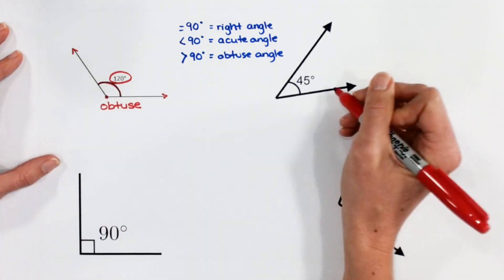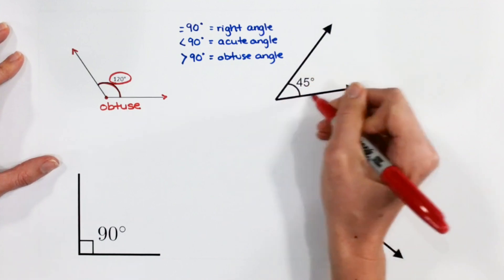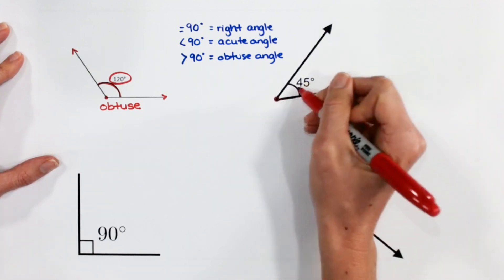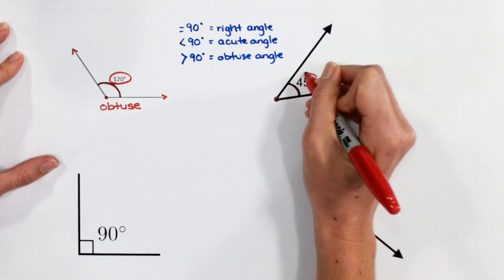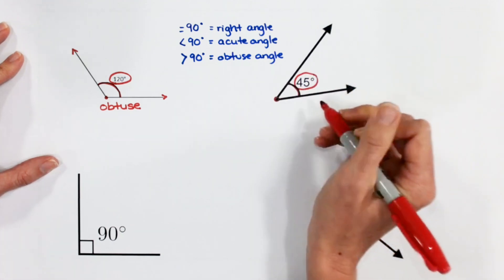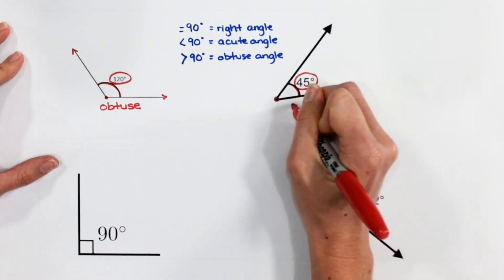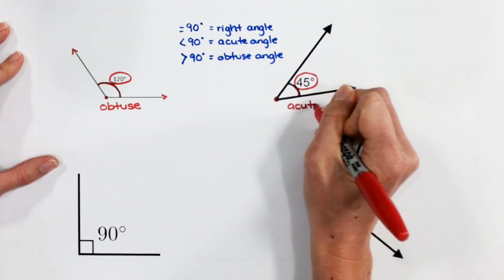Here, I have a ray, another ray, endpoint, and my angle measures 45 degrees, which is less than 90. So this angle is acute.